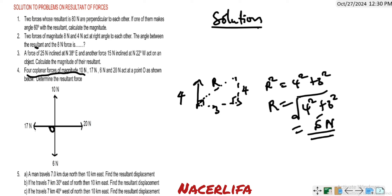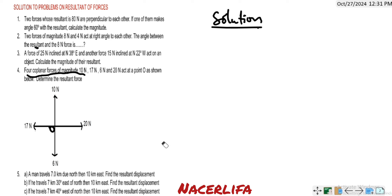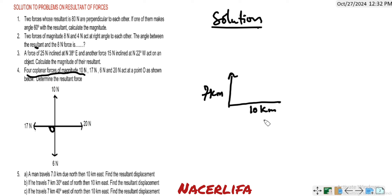Now let us solve problem number 5. Problem 5 says: a man travels 7 kilometers north, then 10 kilometers east. Find the resultant displacement. Drawing the cardinal points: this is north. He travels 7 kilometers north, then 10 kilometers east.